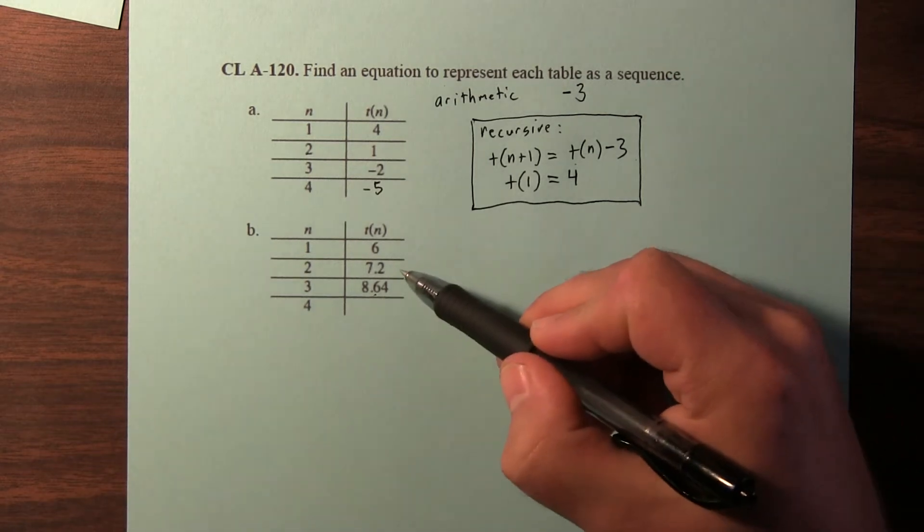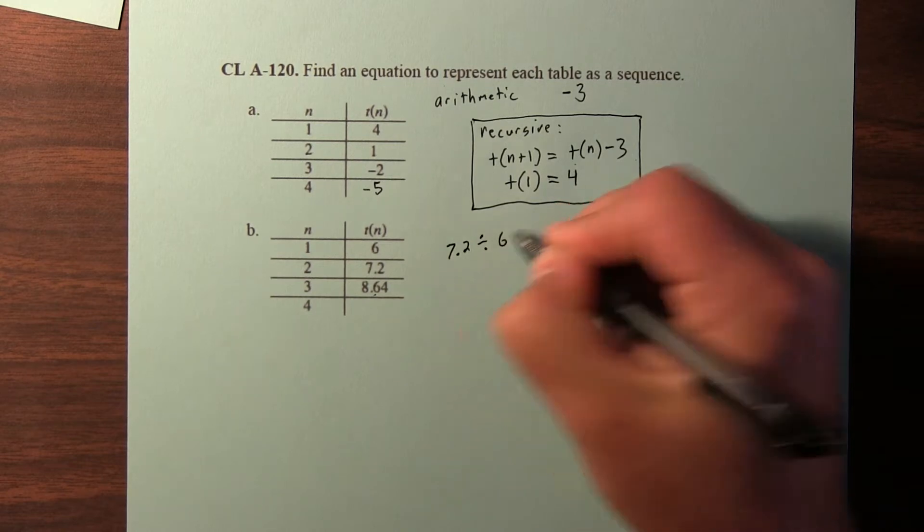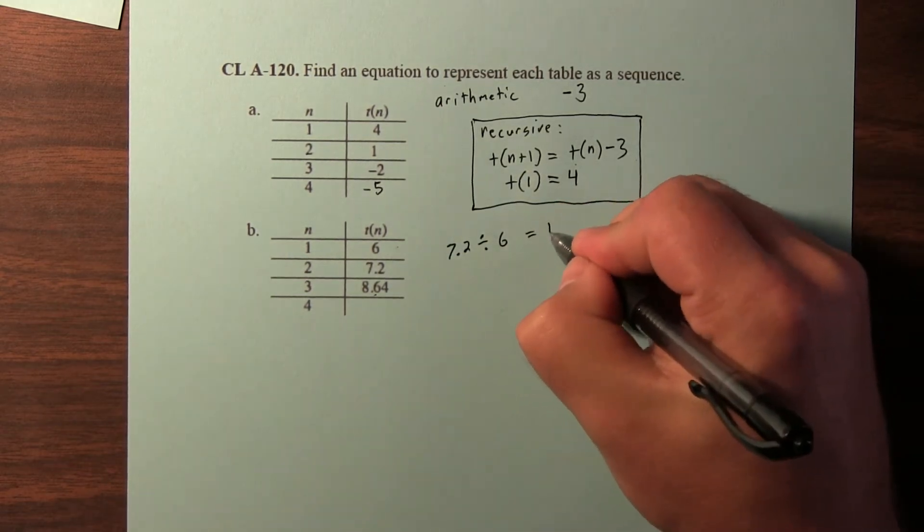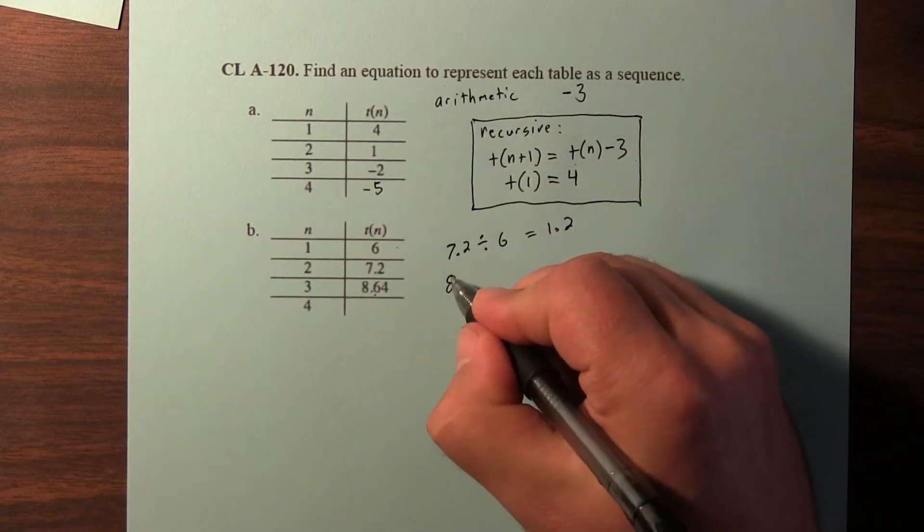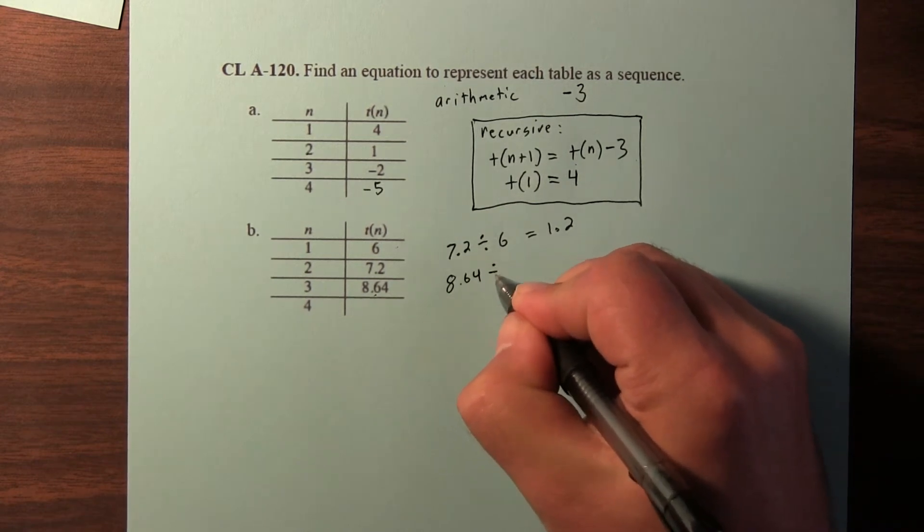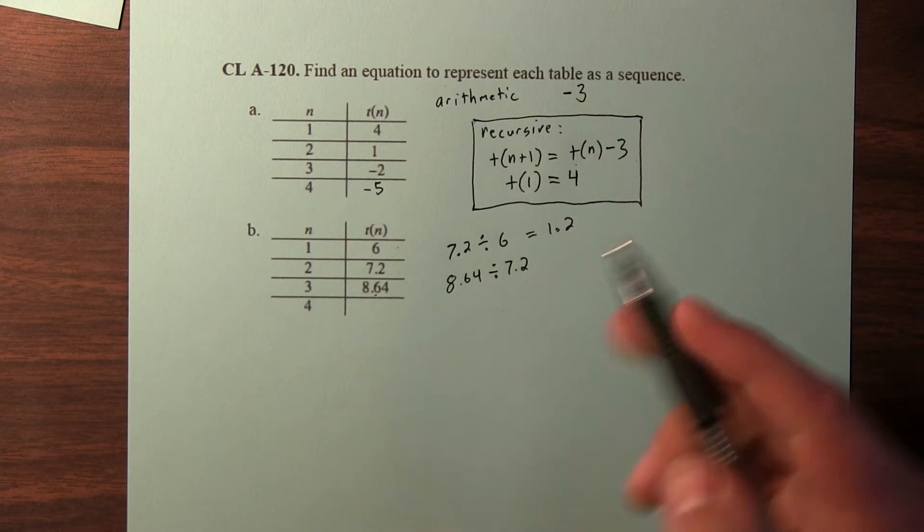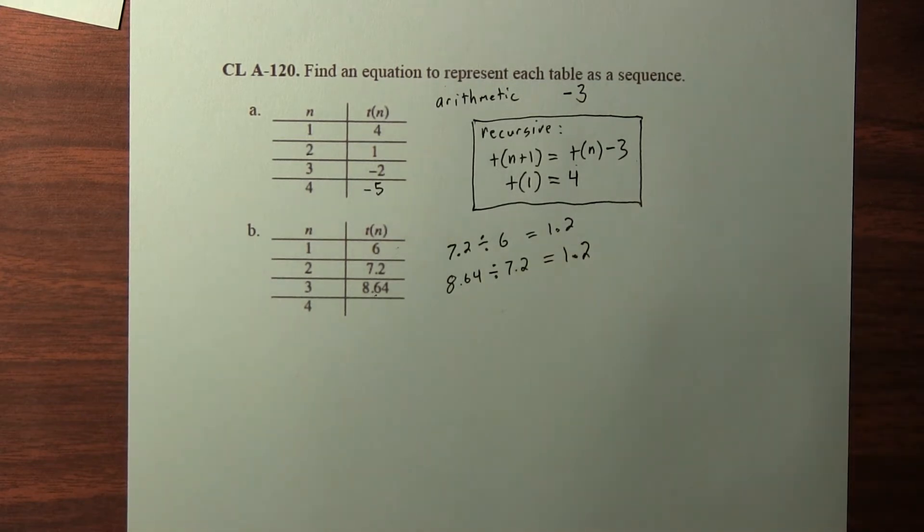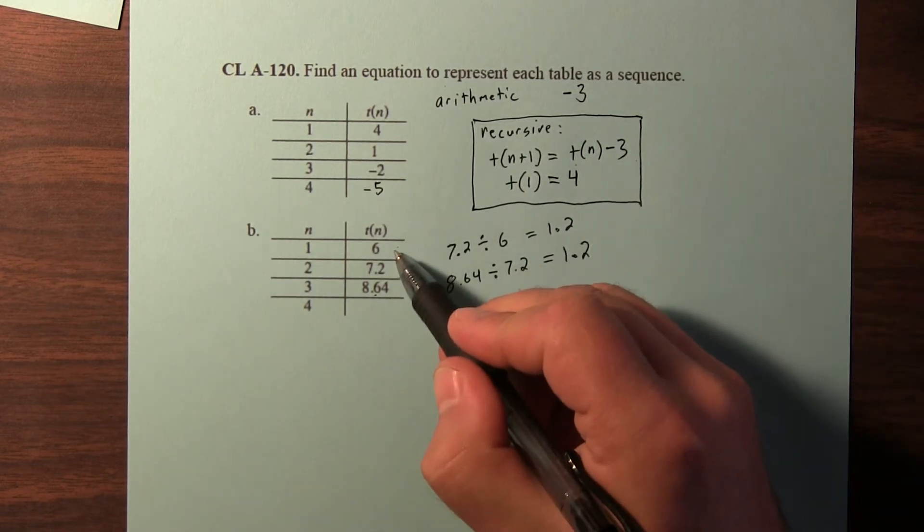One way to check is if I take 7.2 and I divide it by 6. So if I take this term and divide it by the previous term, I end up with 1.2. Let's check the next thing. If I take 8.64 and I divide that by 7.2, so now I'm taking this term and dividing by the previous term, I actually also get 1.2.